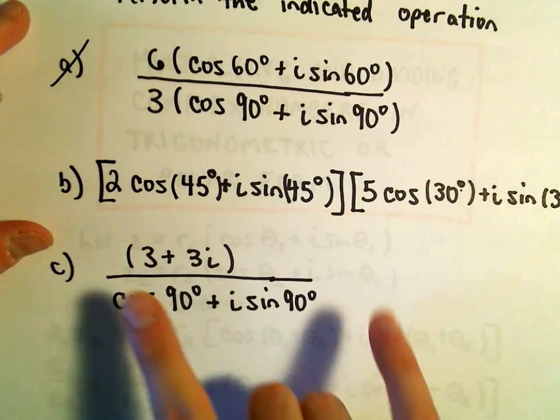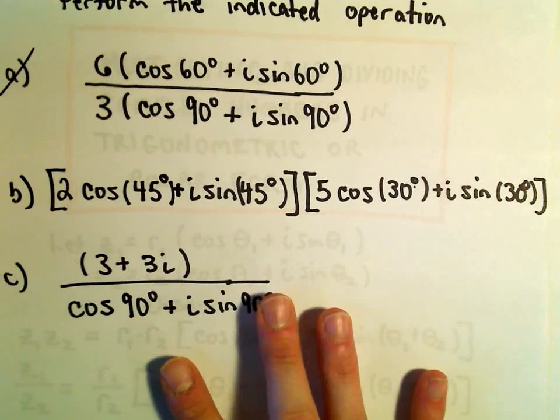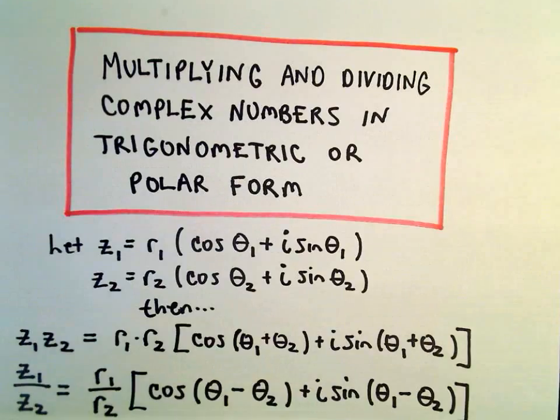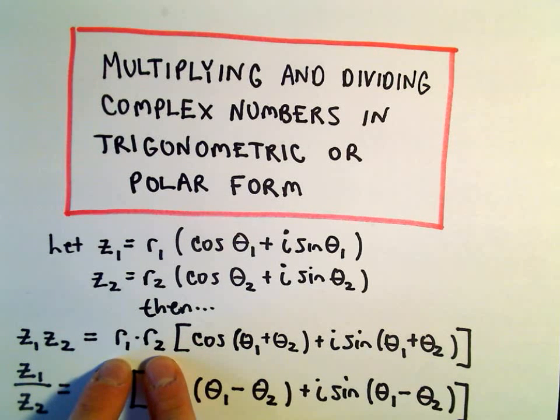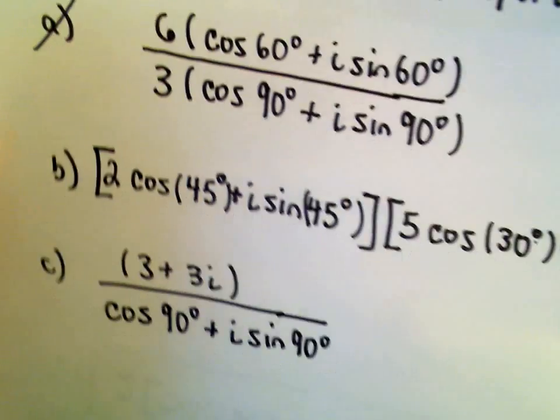Let's go ahead and do part B here as well. Here, we're multiplying two complex numbers in polar form, and again, it says when you are multiplying, it says all we do is we multiply the r1 and the r2, and then we add the angles together instead of subtracting them.